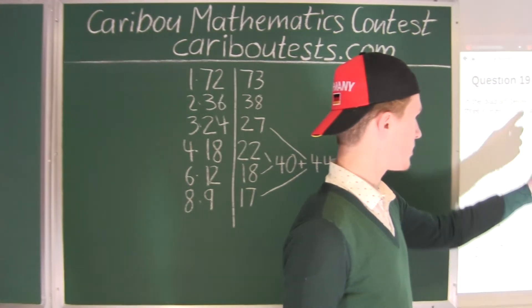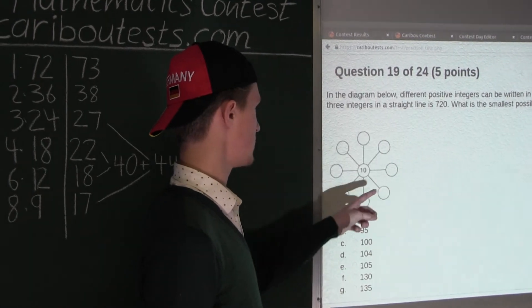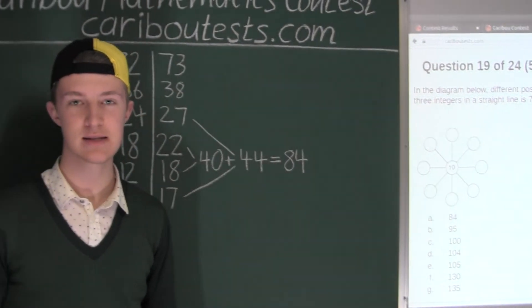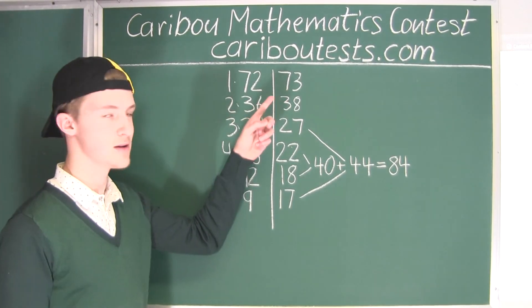So 84 is the smallest possible sum of all the 8 numbers surrounding the 10. If you'd like to know more about this contest, please feel free to visit our website at cariboutests.com.